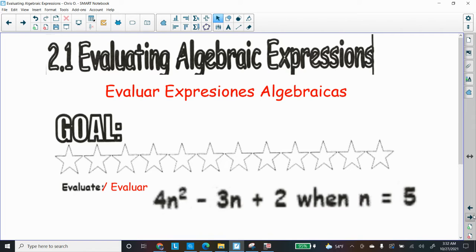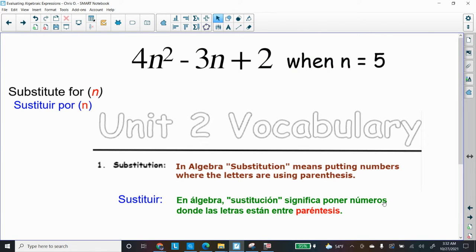All right, let's get going. We are going to be talking about evaluating algebraic expressions. Our goal is to figure out what this expression equals when you are given a number. Here we have n = 5, and we have this expression: 4n² - 3n + 2. We want to figure out what that equals when n = 5.